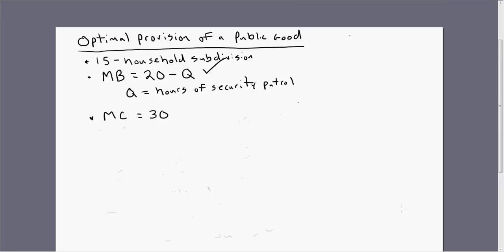Hello, this video will look at the optimal provision of a public good. Imagine we have a 15 household subdivision, and the members of this subdivision are thinking about hiring a security patrol, which would be a public good.